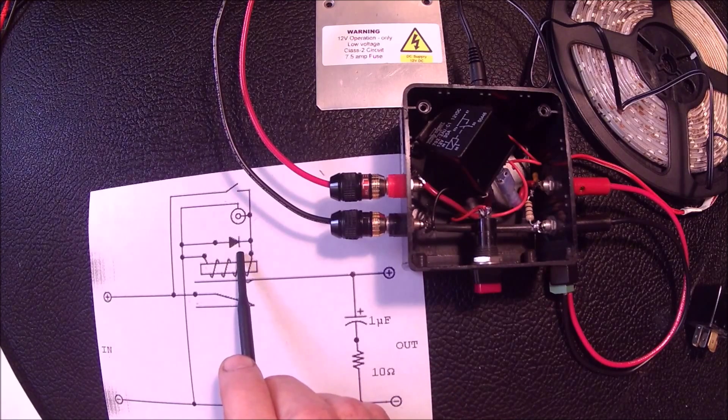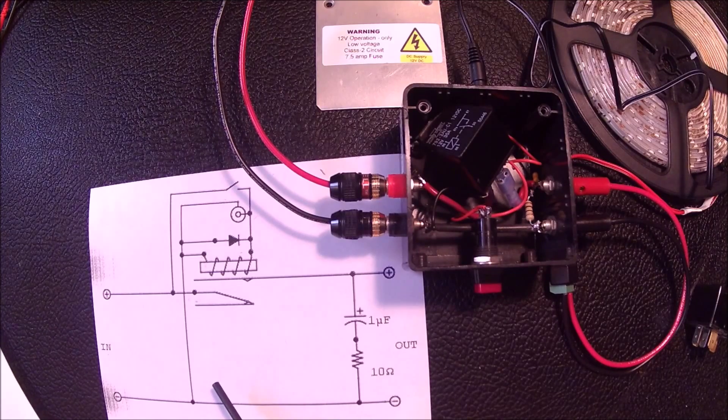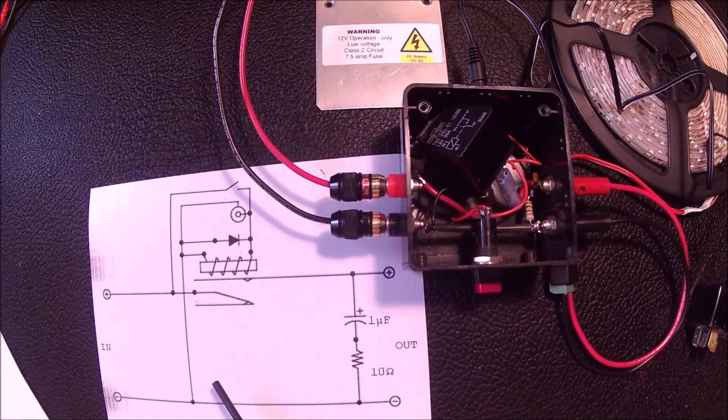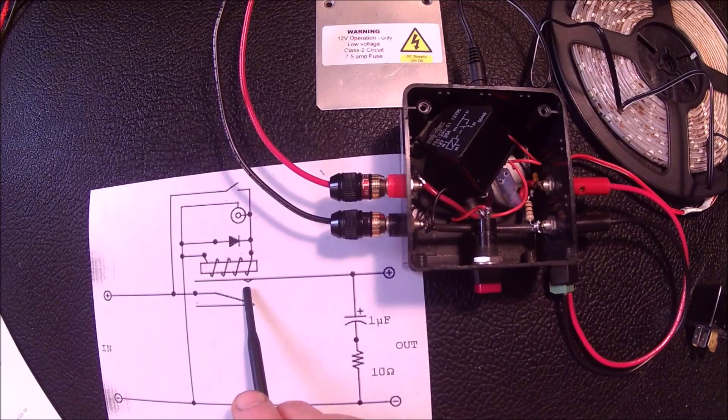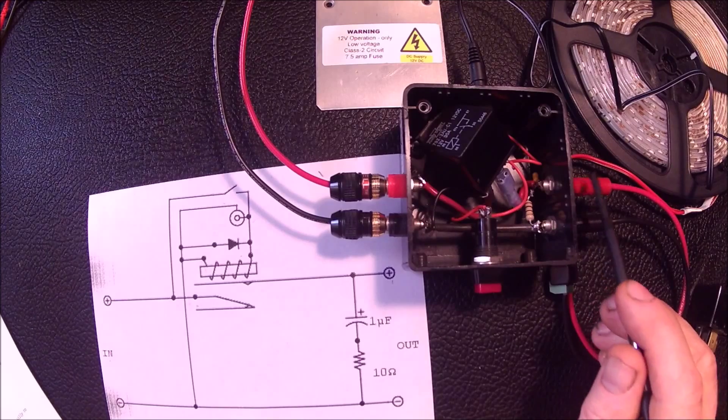And then I added this optional snubber diode across the relay coil to help dissipate the back EMF from switching the relay coil off. So then the output contact of the relay connects to the positive connection on the output here.